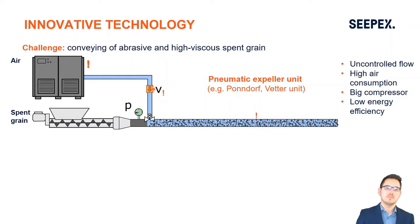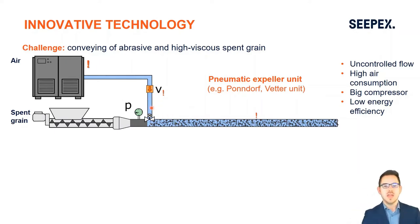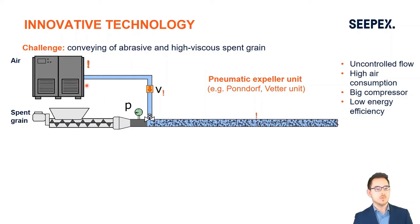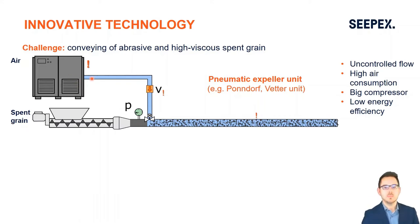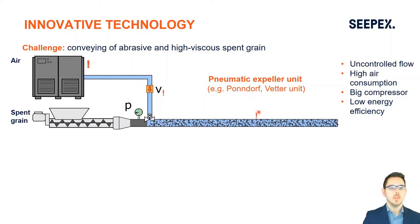Conventional lean phase conveying requires very high, constant velocity of compressed air through the system — an uncontrolled, constant flow — therefore requiring a very large compressor. For mid-range or larger breweries, compressors in the range of 100 kilowatt installed motor power are common, because you cannot buffer the compressed air and the compressor is running nearly all the time when conveying spent grains.